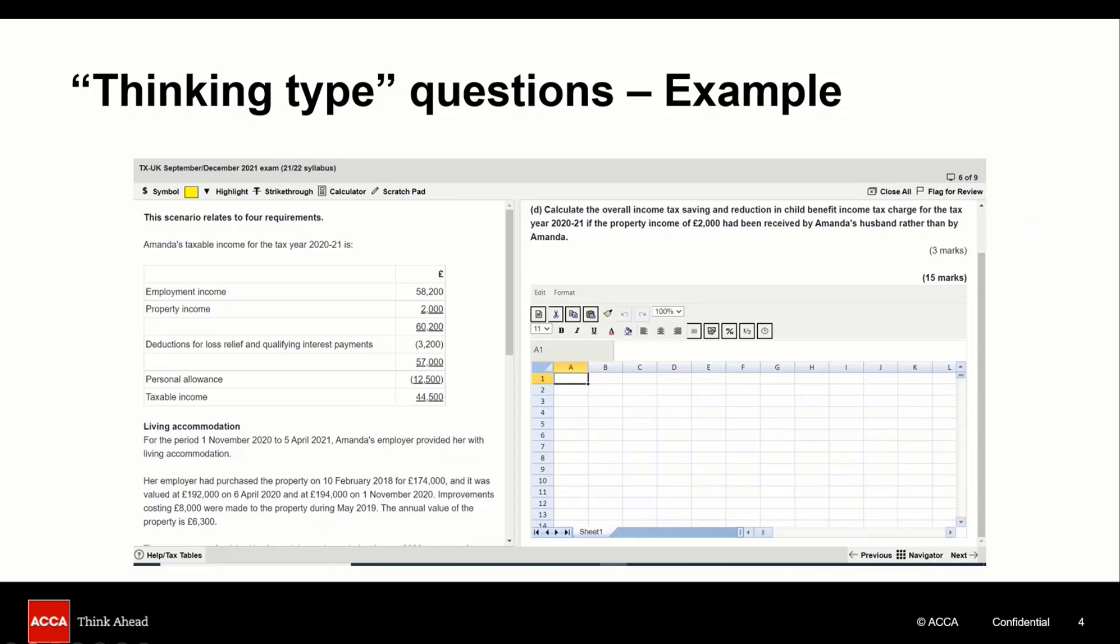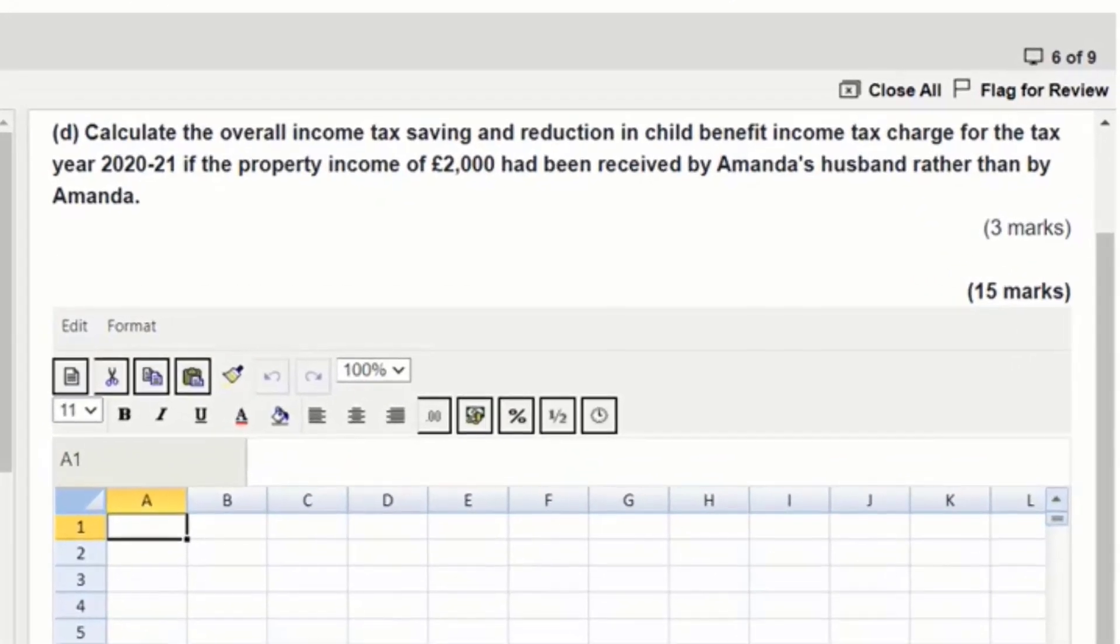This question is taken from question 2D of the past exams sample September December 2021 from the ACCA practice platform. The requirement asked candidates to calculate the overall income tax saving and reduction in child benefit income tax charge for the tax year 2020-21 if the property income of £2000 had been received by Amanda's husband rather than by Amanda and it carried three marks.